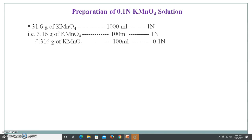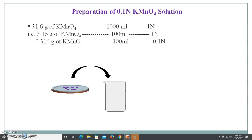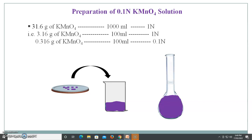To prepare the solution, simply weigh 0.316 grams of potassium permanganate, transfer it into a beaker, add a small amount of water and dissolve it. Then transfer this solution into a volumetric flask and make up the volume to 100 ml by adding distilled water. The resulting solution has a concentration of 0.1 normal.